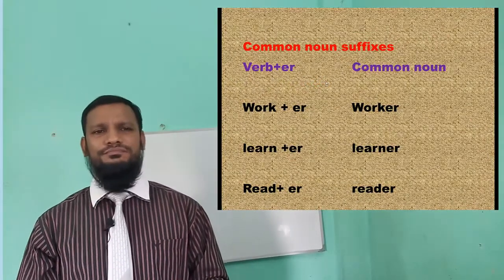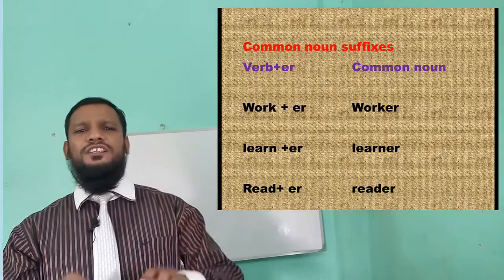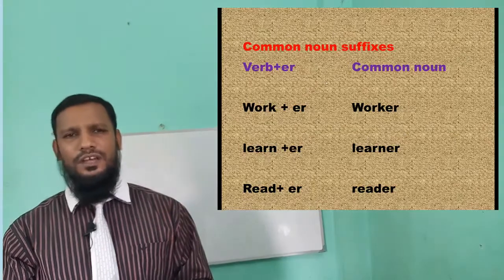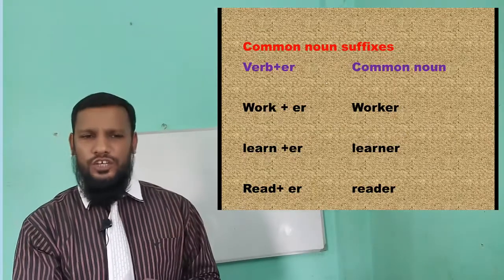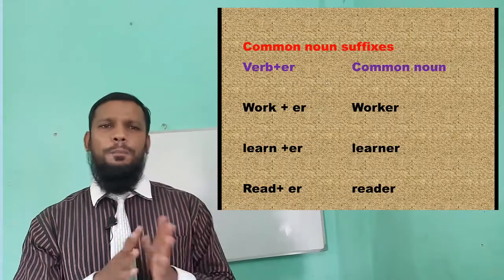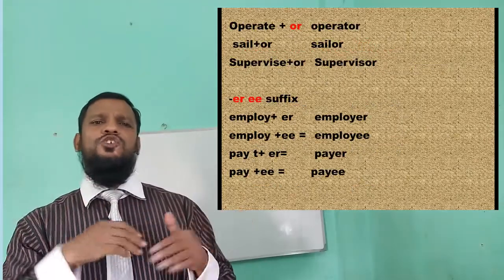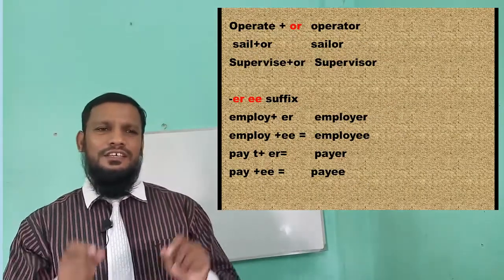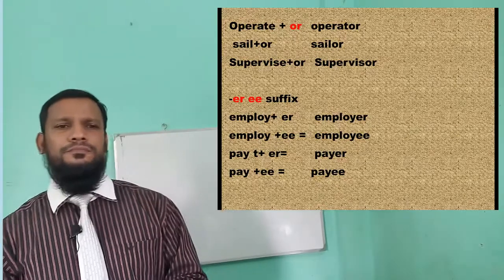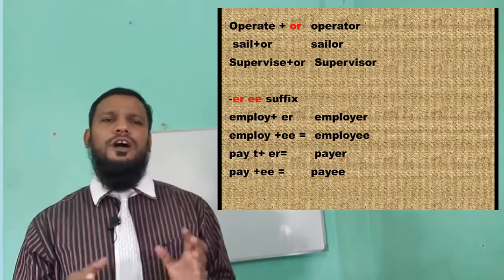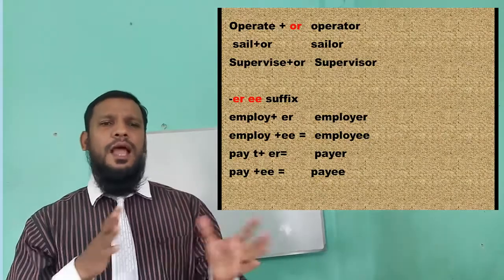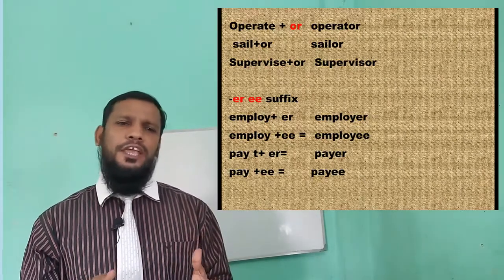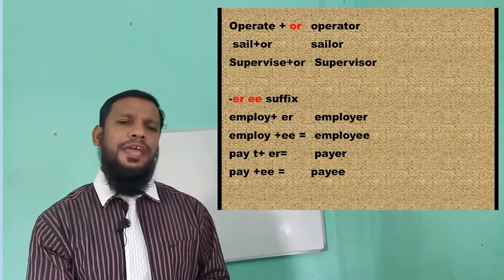Verb plus '-er' turns into a common noun: work becomes worker, learn becomes learner, read becomes reader, operate becomes operator, sail becomes sailor, supervise becomes supervisor. Also '-er' or '-ee' as a suffix: employ becomes employer or employee, pay becomes payer or payee.